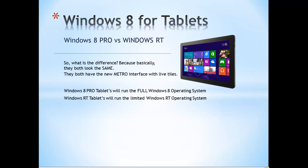Windows RT is a limited version of the Windows 8 operating system and it is designed for ARM processors. ARM processors are designed for running tablet computers and sometimes mobile phones — 95% of tablets and mobile phones use ARM processors. Windows RT uses ARM-based processors, which are low power consumption processors, meaning they use less power and therefore provide longer battery life.